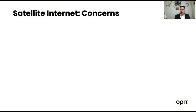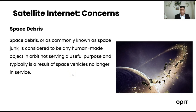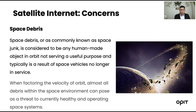A major concern regarding satellite internet is space debris. Space debris — commonly known as space junk — is any human-made object in orbit that is no longer serving any function. When we launch satellites or work on the ISS or other space vehicles, we tend to leave discarded material in space. This accumulates over time, and given the velocity of this debris in orbit, it can pose a serious threat to currently healthy and operating space systems, potentially harming other satellites or the ISS.